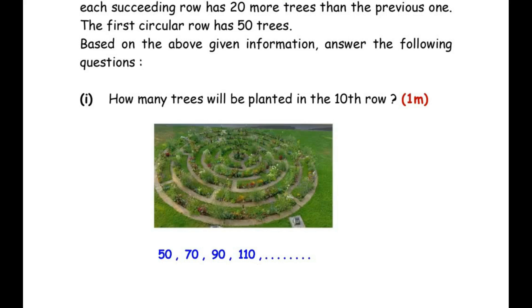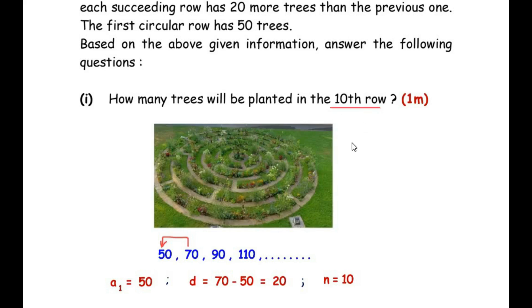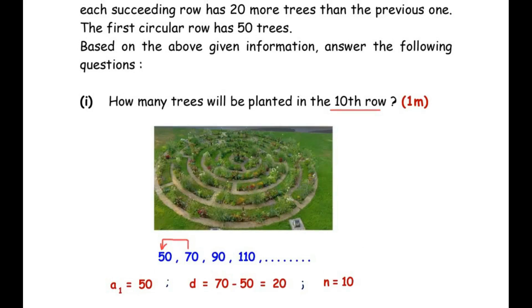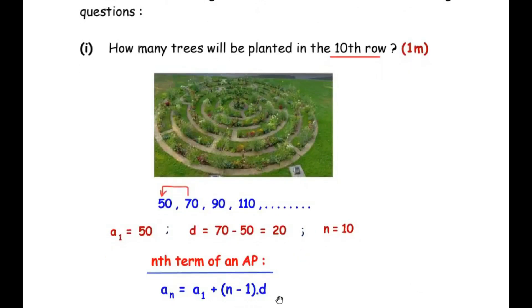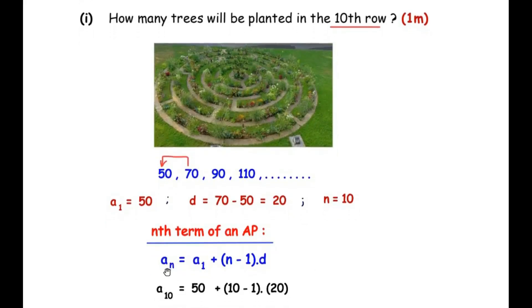The first term of the sequence is a1 = 50. The common difference d = 70 − 50 = 20. Since we need to find the number of trees in the 10th row, n = 10. We use the nth term formula: a_n = a1 + (n − 1) × d, where a_n is the number of trees in the nth row.